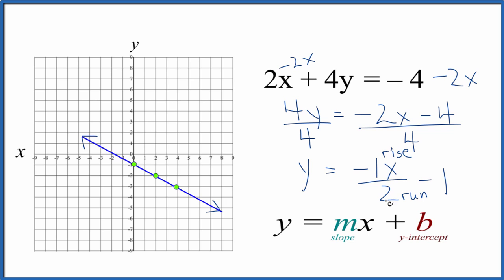Our slope is negative 1 half. And we have a y-intercept of negative 1. If you used a table of values to graph this equation, you'd end up with the same line.